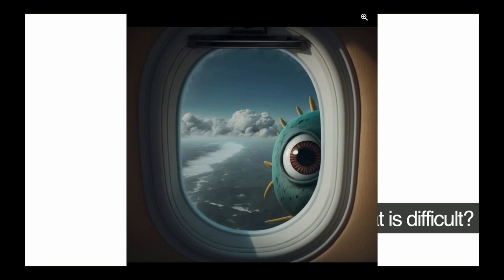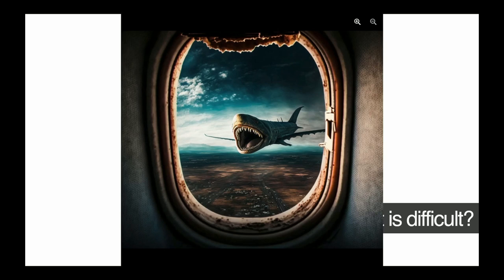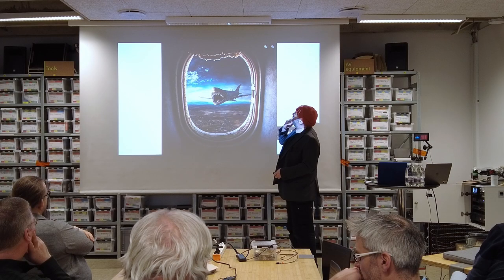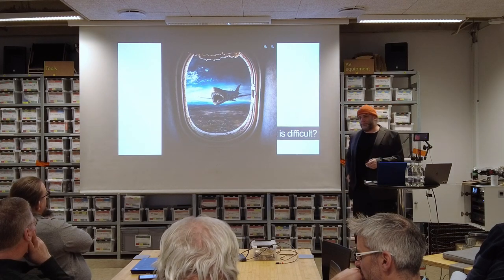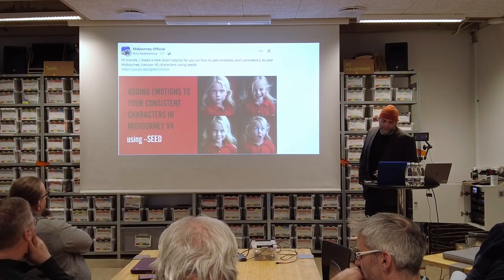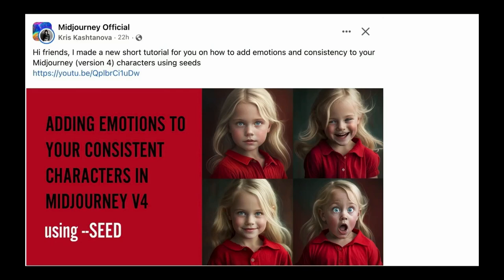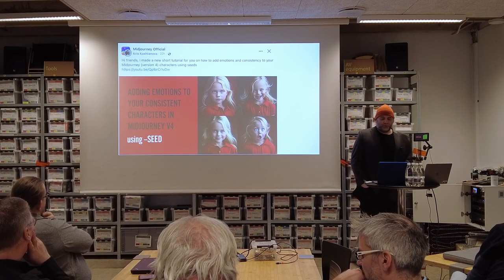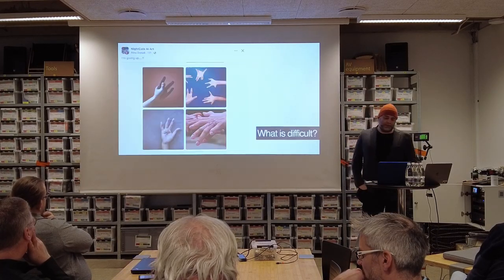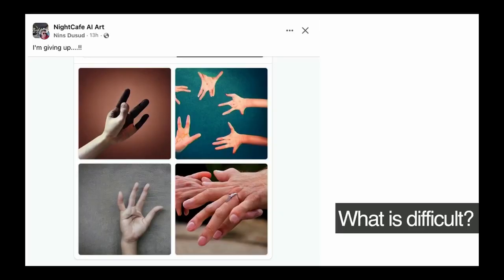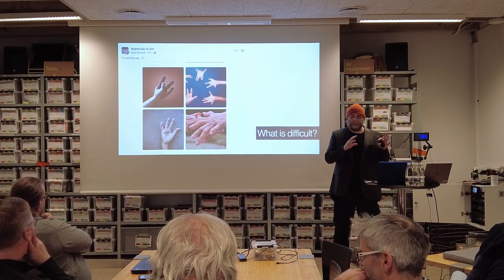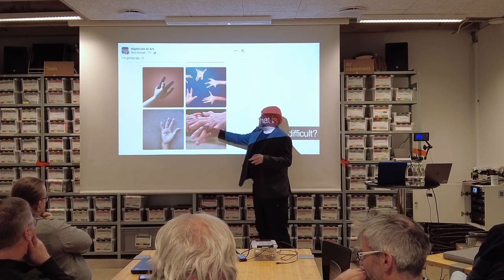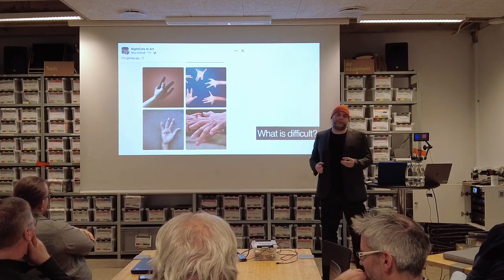Here we're imagining a little monster outside an airplane, and here's a shark outside an airplane — a useful use of an AI, something we probably wouldn't see. But notice how it's mucked up the window — it doesn't understand what's cloud and what's window. That's a typical sign of an AI. Consistent characters are very difficult, though experts have managed to do it using a command called 'seed.' Also, AI is notoriously bad at doing hands.